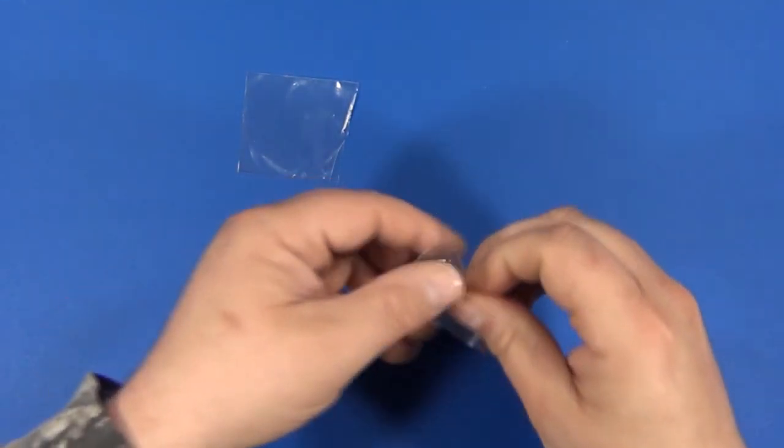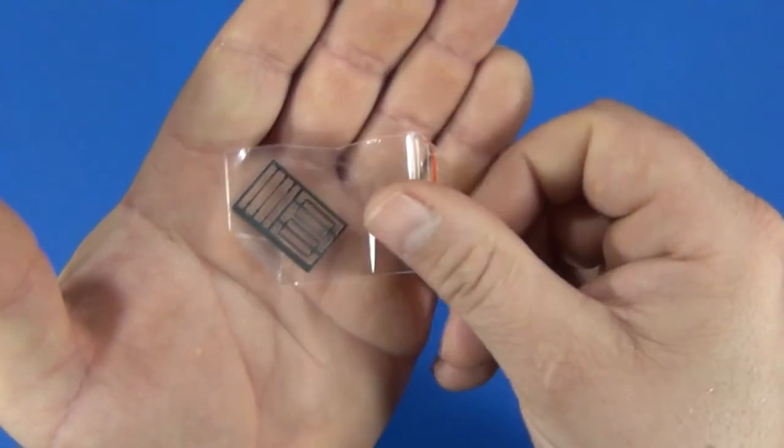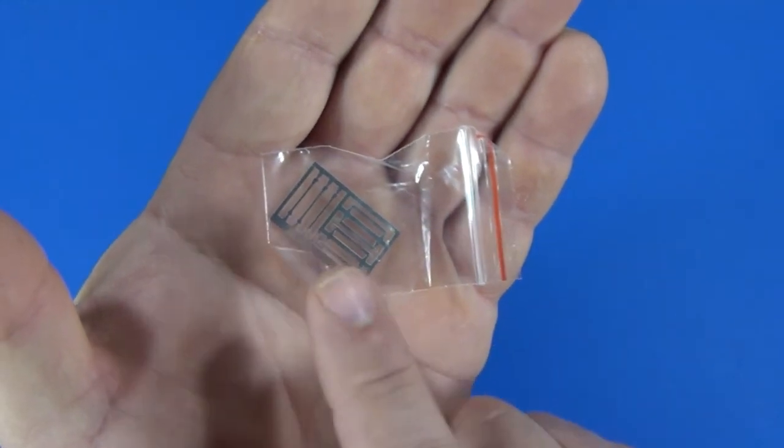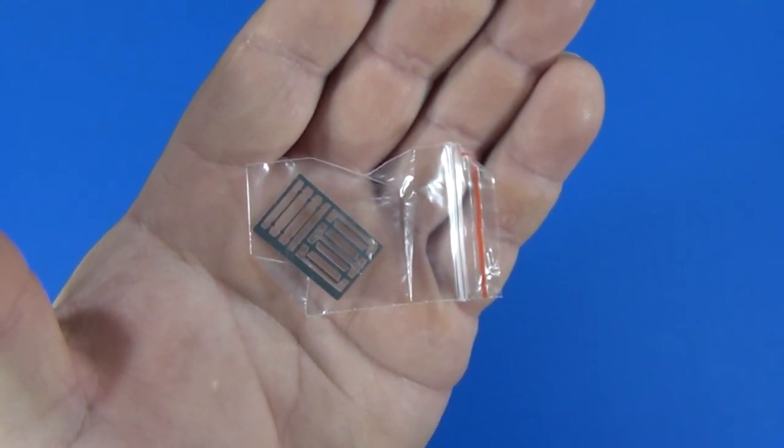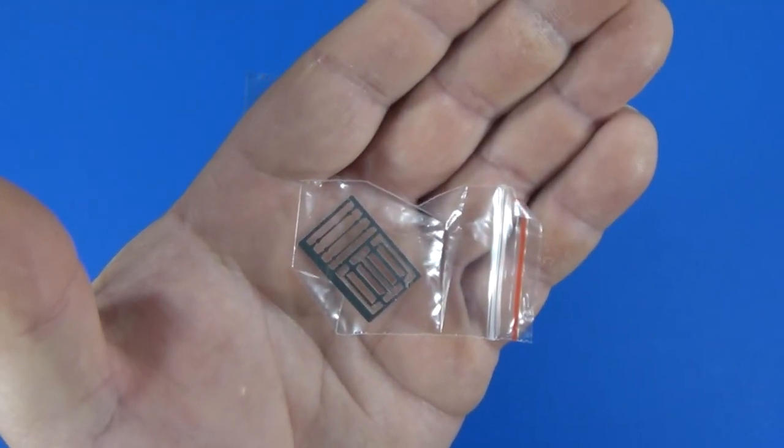This here is the photo etch fret, and this is actually for the figure set that's included. These are the headbands that connect the earphones together. So that's all those are.